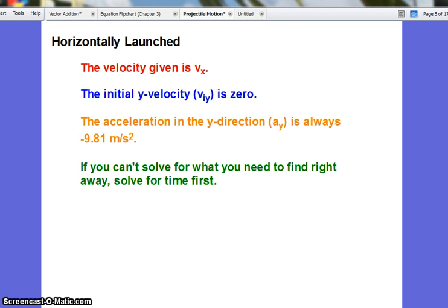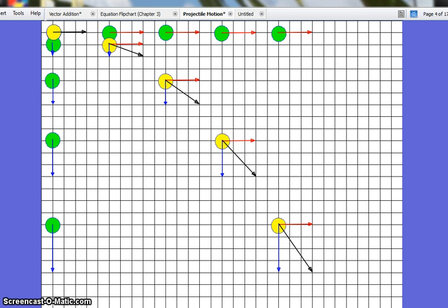The initial y-velocity is zero, and then it picks up speed, getting faster and faster as it moves along. So the only velocity given in the beginning is vₓ if it is launched horizontally.